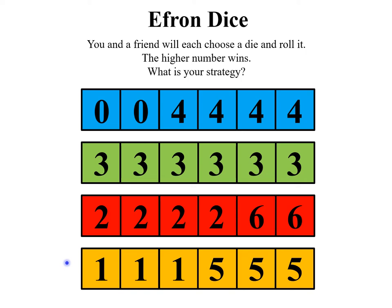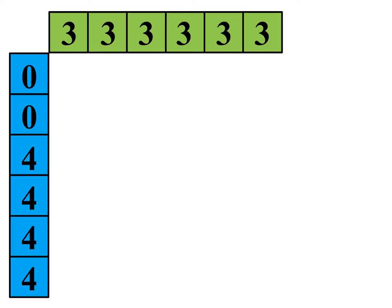So you guys each pick a die, you roll it, and the higher number wins. What is your strategy? Lots of times when people are asked this they think, well, let's figure out which is the most powerful die. What I'm going to do is pit the blue die against the green die.